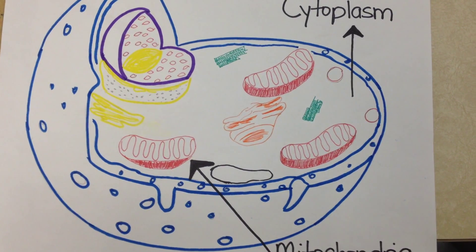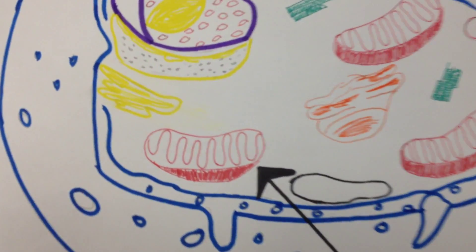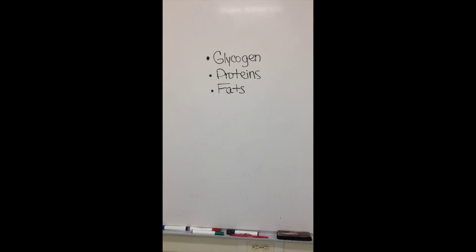Cellular respiration occurs in the mitochondria. The energy source of cellular respiration is glycogen, fats, and proteins.